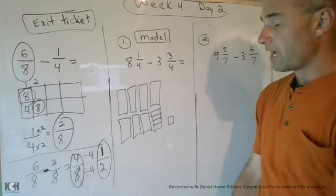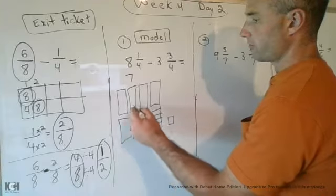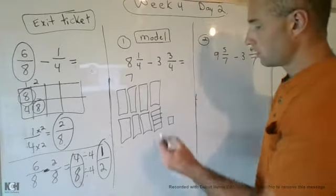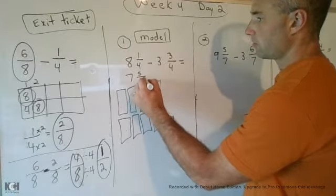Because we don't just have eight, we have 8 and 1/4. So I'm going to take one of these whole numbers and I'm going to break it into fourths. So now I have seven holes, one, two, three, four, five, six, seven, and how many fourths? One, two, three, four, five. Five fourths.